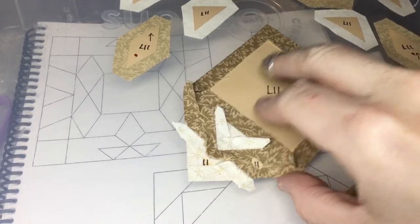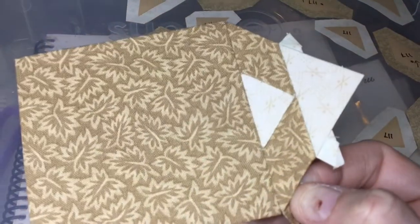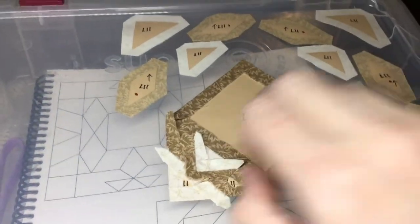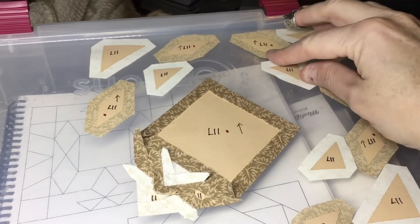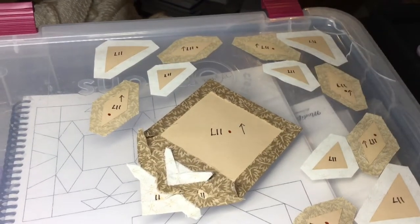So I've attached the corner to my center square, and now I'm going to do the opposite corner. I'm going to make the unit and then attach it to each one.